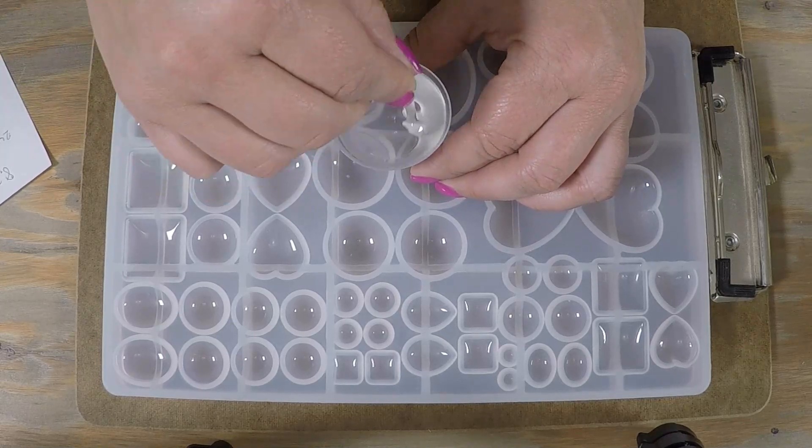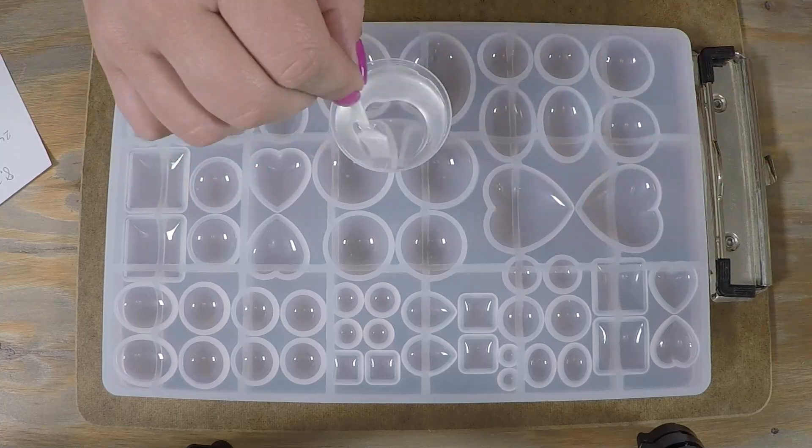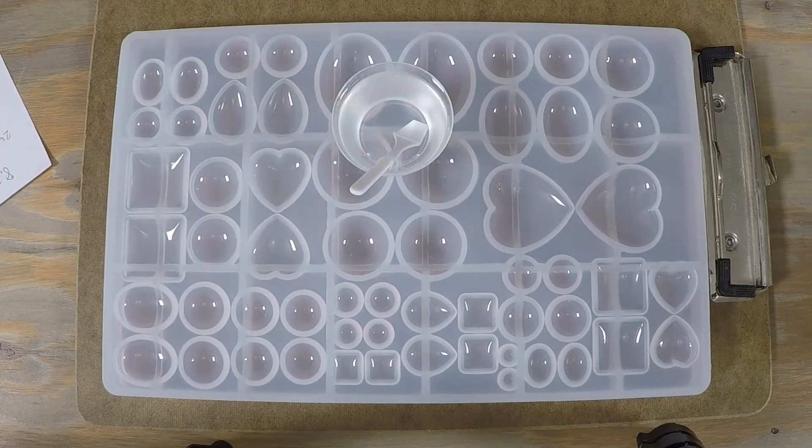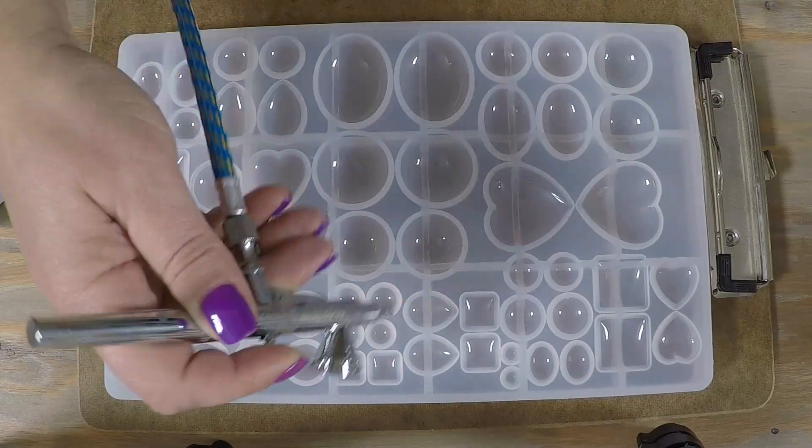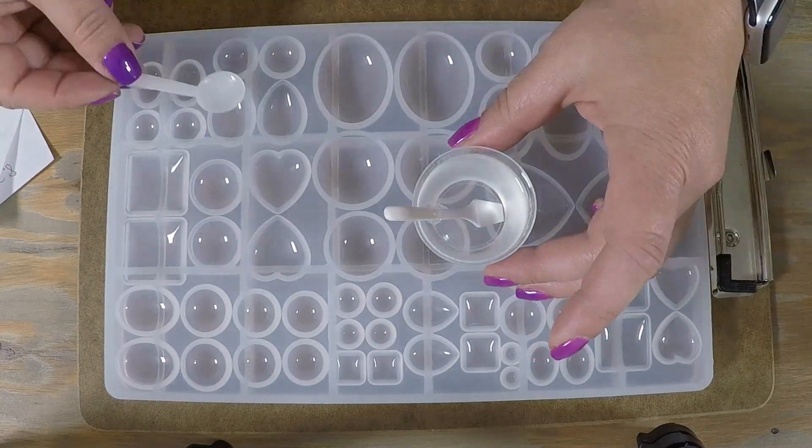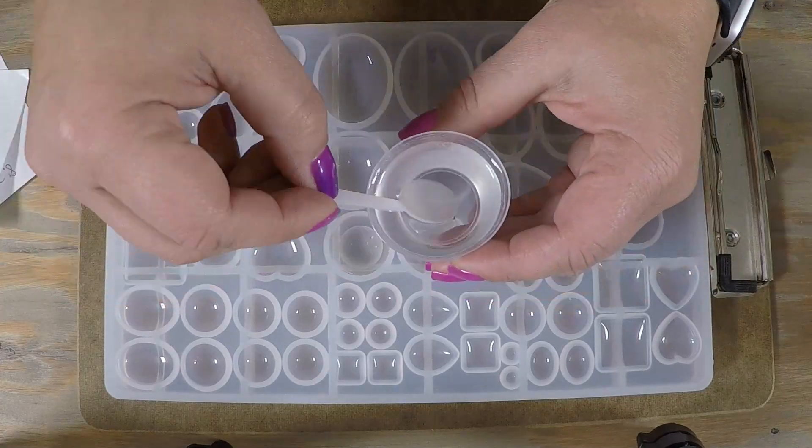I started stirring really well, scraping the bottoms, the sides, and the stick, getting some of the little bubbles off the top. Then I let it sit for five minutes, grabbed any additional bubbles, and cleaned out the mold with my airbrush.